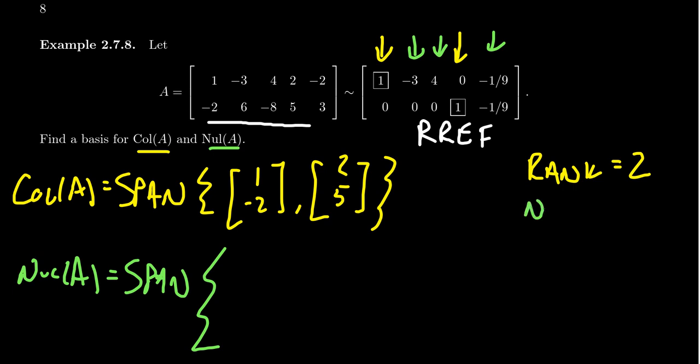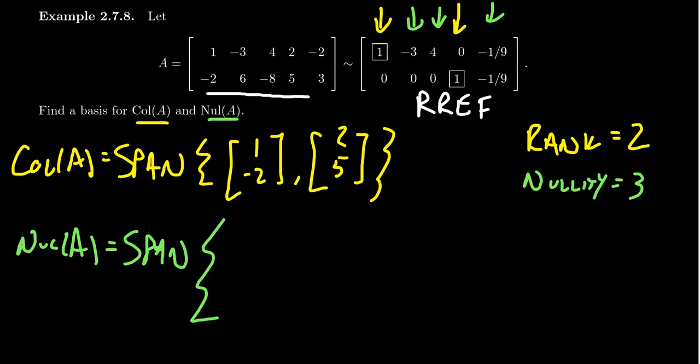Counting those non-pivots, we see that the nullity of this matrix is going to be three. The nullity is counting how many free variables there in the system. Each free variable will give us a spanner for the null space. And so let's now set up our template. We're going to get three vectors for the basis of the null space, like so. We get a vector for each of the free variables.